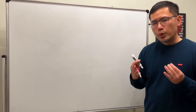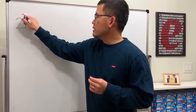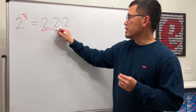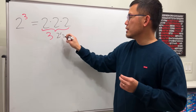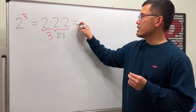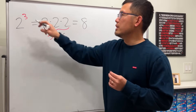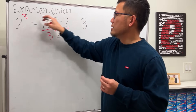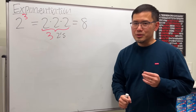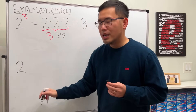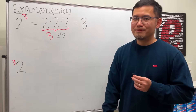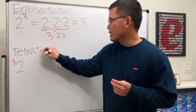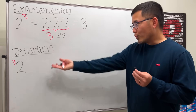We all know how to compute 2 to the third power — write down two three times and multiply: 2 times 2 times 2 equals 8. This operation is called exponentiation — it's just a fancier way of saying we have that exponent. Now, have you seen 2 with a 3 up and to the right in a different notation? This is called tetration.